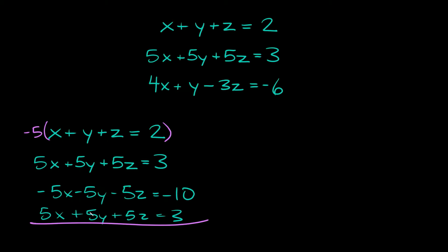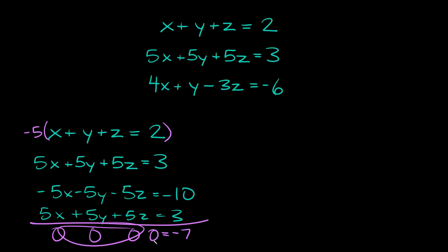Now we're gonna add these two together. So first of all negative 5x plus 5x, well that's just equal to 0. Negative 5y plus positive 5y, same thing. And here same thing. And then lastly we get negative 10 plus 3 is equal to negative 7. So on this side we basically just got a big fat 0, so here we get 0 is equal to negative 7.